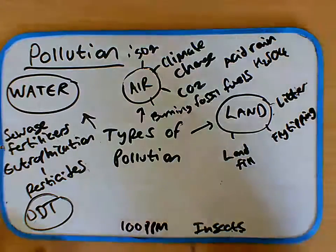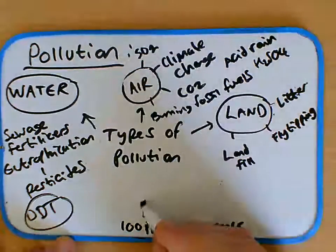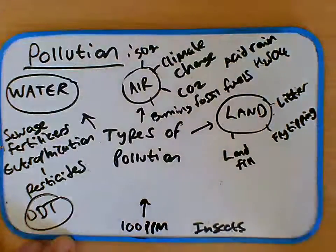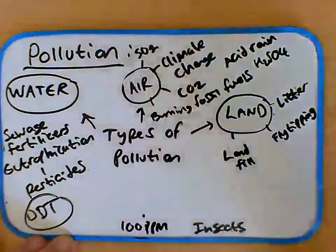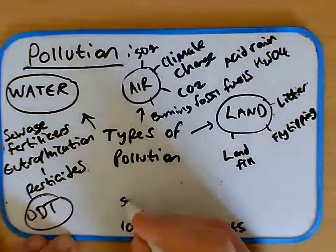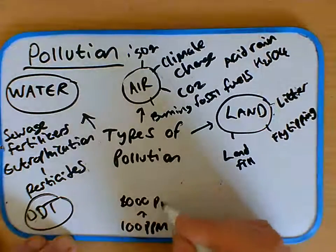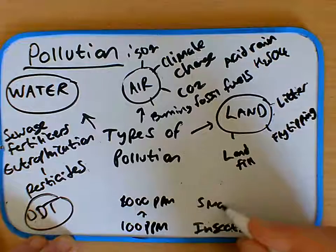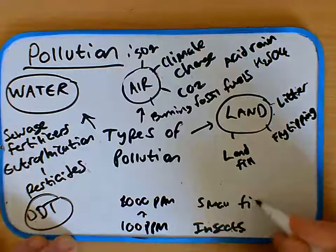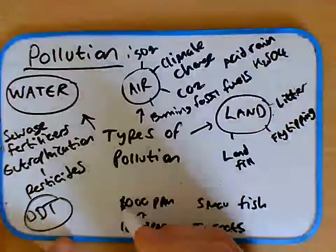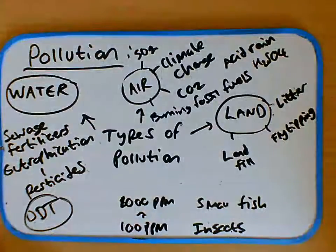Ppm stands for parts per million. What happened is as those insects were eaten by larger animals, things like small fish, the level of the DDT actually accumulated, it built up.